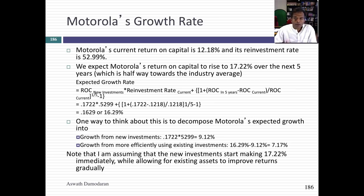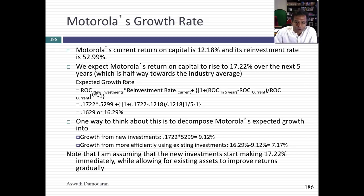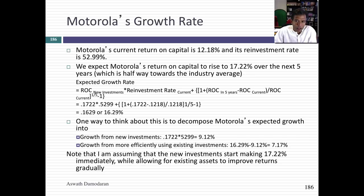Think of why. Let's assume you have a company with a 5% return on capital, no reinvestment, and it expects its return on capital to be 6% next year. No reinvestment means the reinvestment rate is zero, so using the reinvestment rate equation there's no growth next year. But if your return on capital goes from 5% to 6%, that's a 20% growth in income. The change in return on capital becomes a growth rate in the year in which it happens.